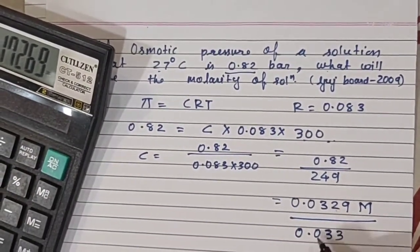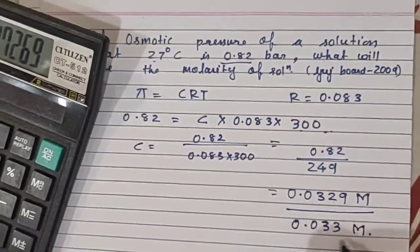So C equals 0.82 divided by 0.083 into 300. Let me multiply, 0.083 times 300 is 24.9. So 0.82 divided by 24.9 equals 0.0329 molar. And in options, if it is given 0.033, then also you will understand. After 2, 9 is there, so it can be written as 0.033 molar. Both answers are correct.